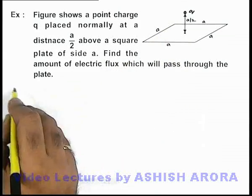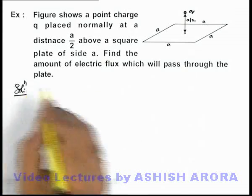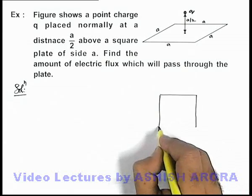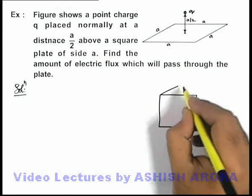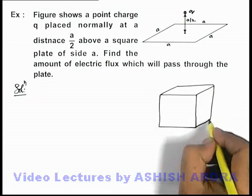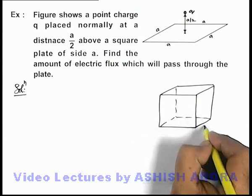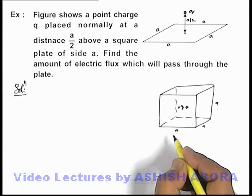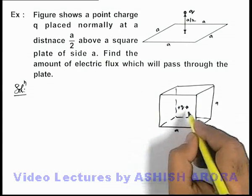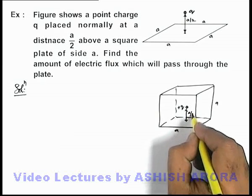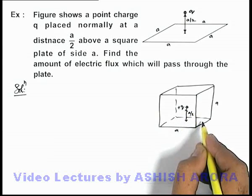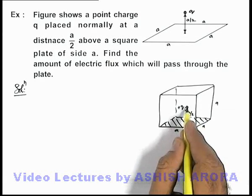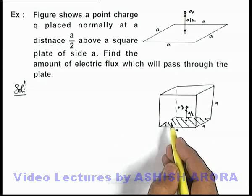To analyze this situation, we can make use of symmetry. If we consider a cube of edge length a, like this which I am drawing here, and at the center of which a charge plus q is placed, then we can see that this plus q will be exactly at a height a/2 above the bottom of the cube. This plate will be similar in situation with respect to the charge as compared to the given situation in the problem.